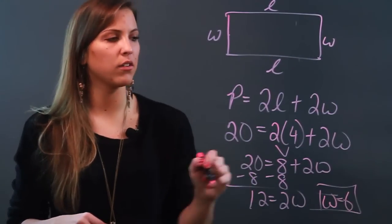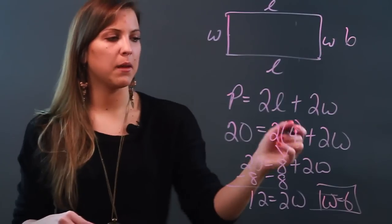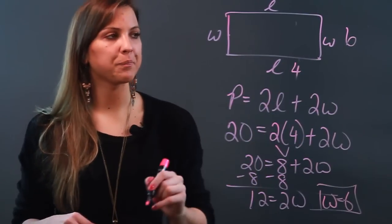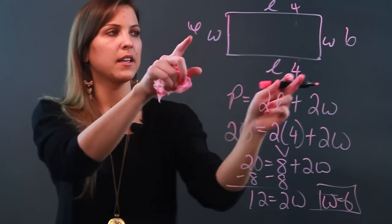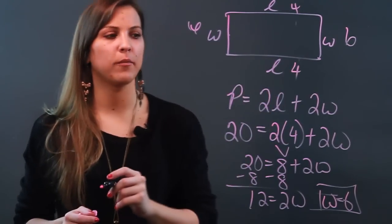So in this particular rectangle, my width would be 6 and my length was given to me, it would be 4. And if I want to double check that, that would also be 6, that would also be 4. I get 10 plus 10 is indeed 20 for my perimeter.